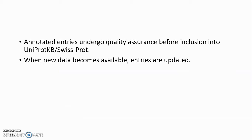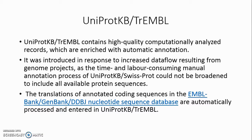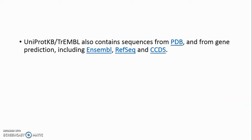UniProt/TrEMBL contains high-quality, computationally analyzed records enriched with automatic annotation. It was introduced in response to increased data flow resulting from genome projects, as the time- and labor-consuming manual annotation process of UniProt/SwissProt could not be broadened to include all available protein sequences. The translations of annotated coding sequences in the EMBL-Bank/GenBank/DDBJ nucleotide sequence database are automatically processed and entered in UniProt/TrEMBL. UniProt/TrEMBL also contains sequences from PDB and from gene prediction, including Ensembl, RefSeq, and CCDS.